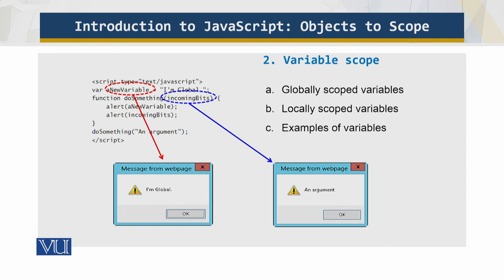Variables defined within a function are scoped solely within that function. This is a global scope variable and this is a locally scoped variable. Here's a global variable called newVariable and a variable called incomingBits which is local to the doSomething function.